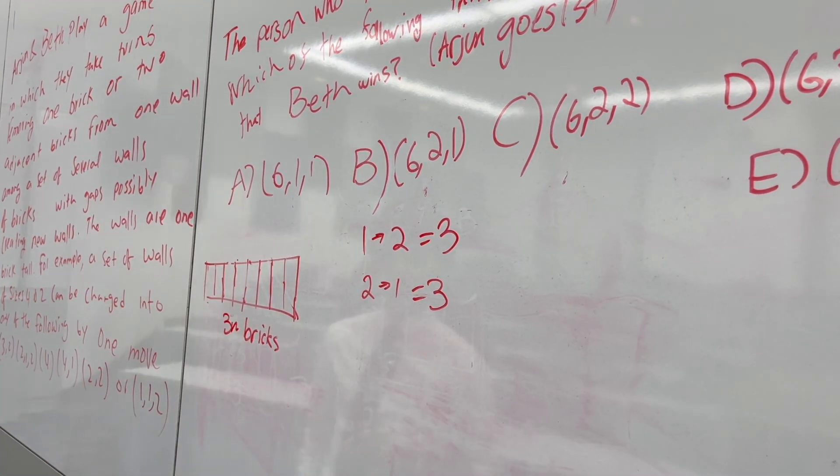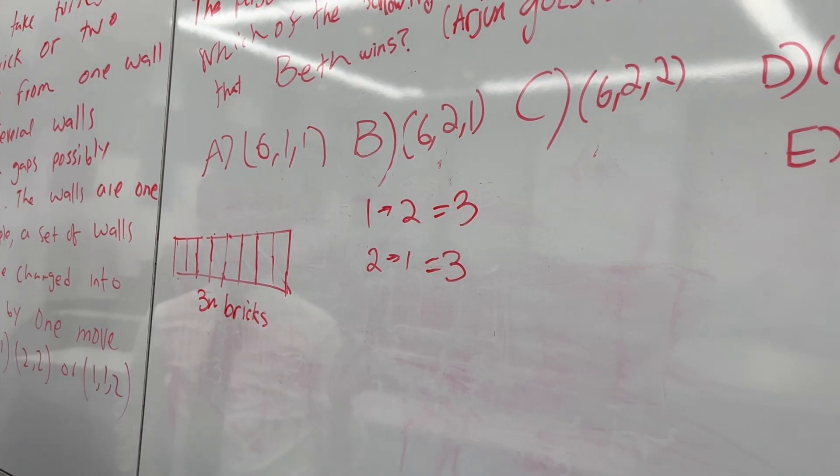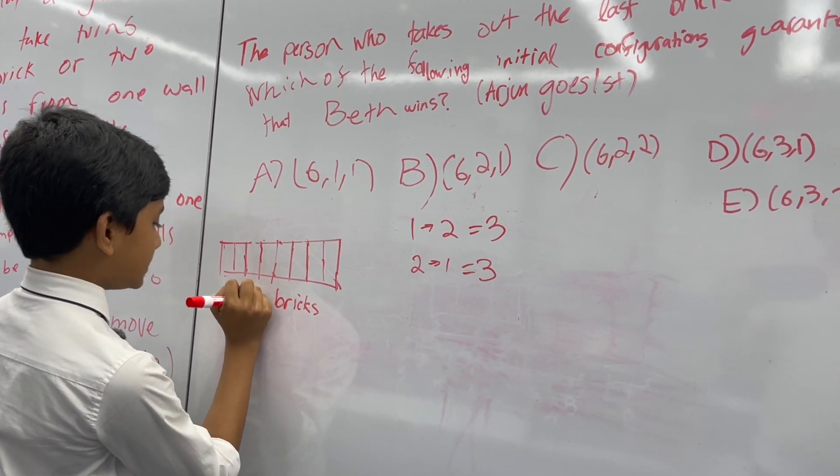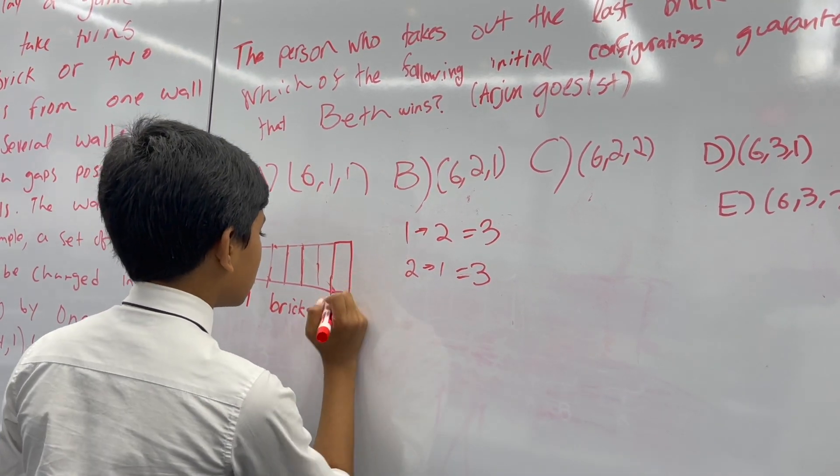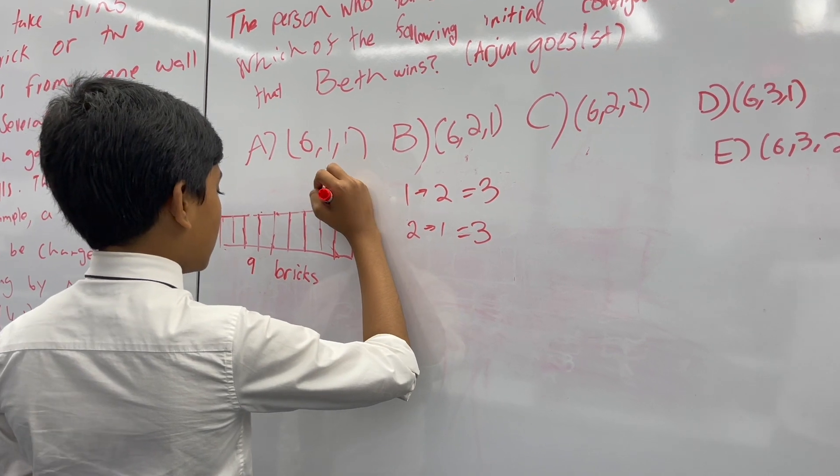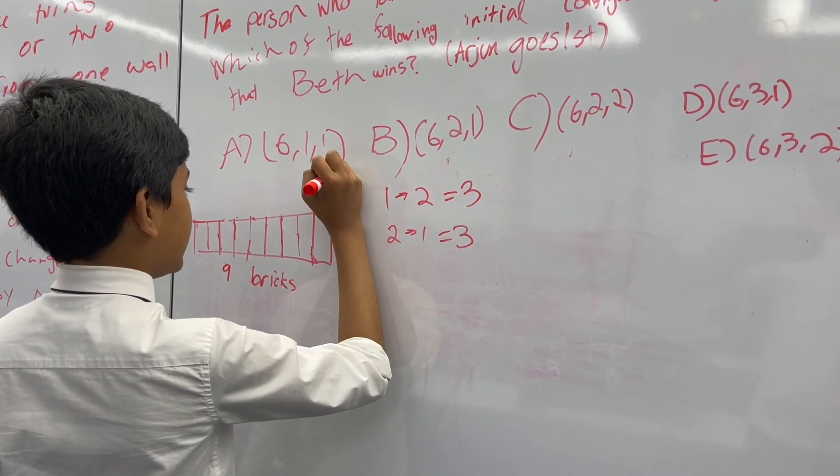That's why we need a multiple of three bricks in order for Beth to force a win. Now the nearest multiple of three to eight is nine. Let's see if it works for nine bricks. Of course, Arjun is going to play first.